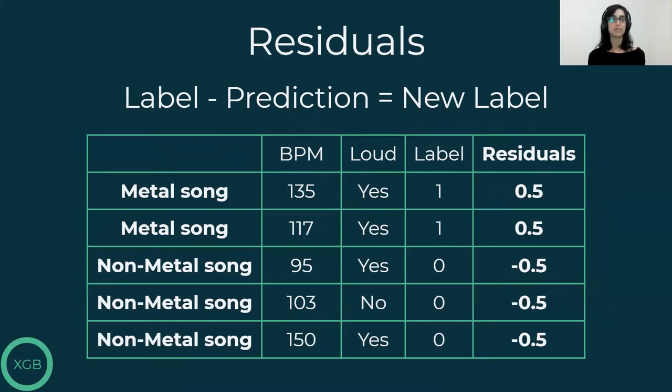Then we calculate the residuals, the difference between the labels and the prediction. So for metal songs, we get 1 minus 0.5, which is 0.5. And for non-metal songs, we get 0 minus 0.5, which is minus 0.5. And we call them our new labels.